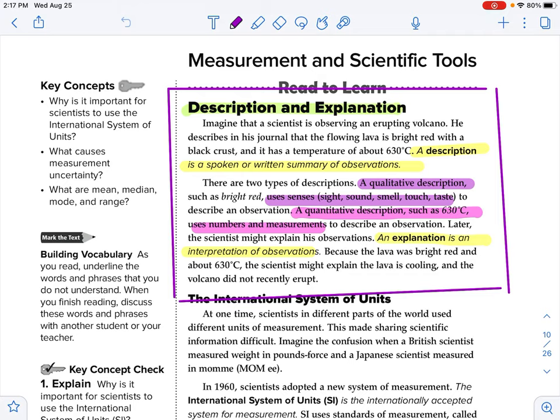Imagine that a scientist is observing an erupting volcano. He describes in his journal that the flowing lava is bright red with a black crust and has a temperature of about 630 degrees Celsius. So here is a vocab word. I know it's a vocab word because it is bolded and it has italics. So go ahead and switch your highlighter to yellow. And let's highlight that vocab word.